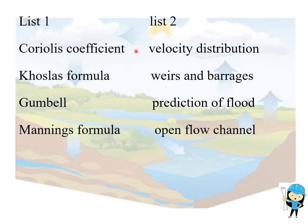Coriolis coefficient is used to find the velocity distribution. Blench's formula is used to find piers and barrages. Gumbel's formula is used to calculate the prediction of flood. Manning's formula is for open flow channels.